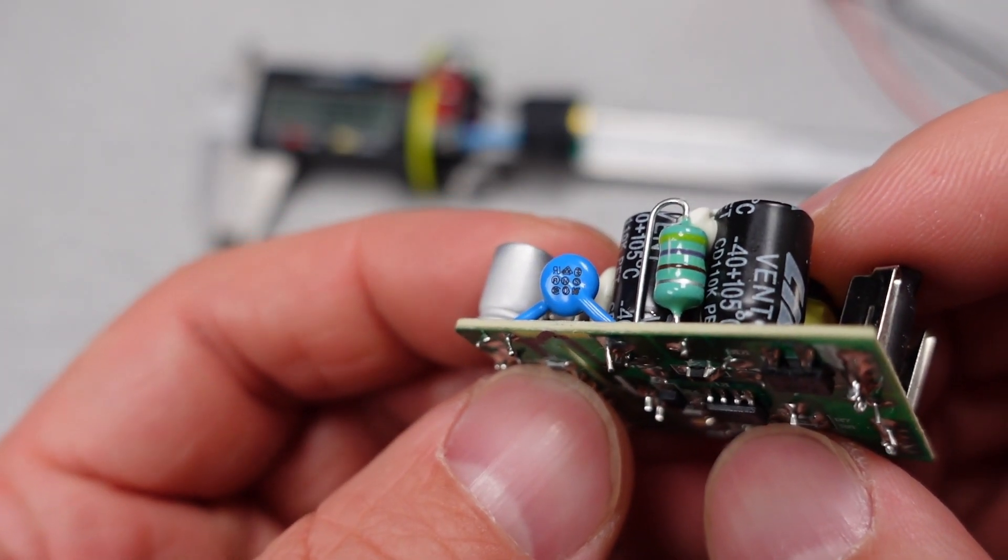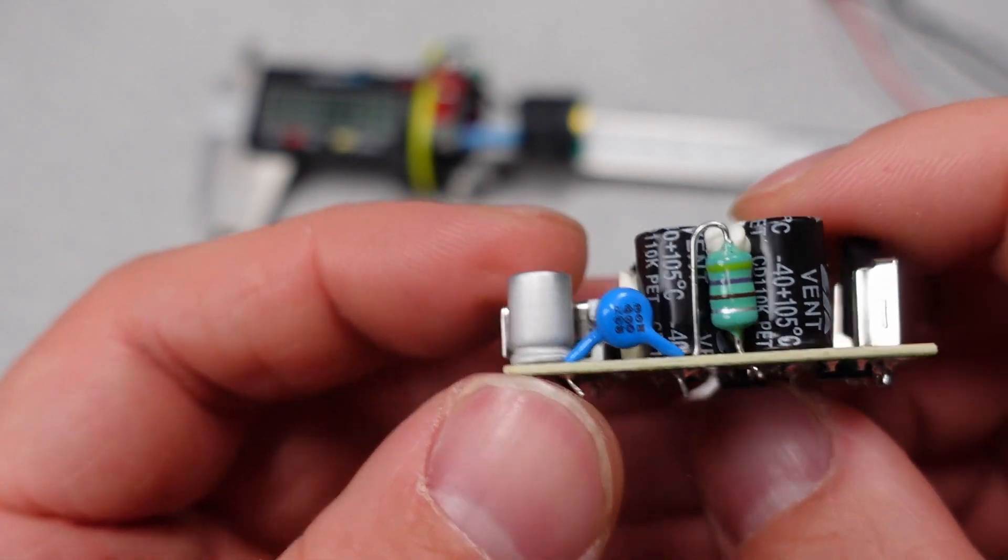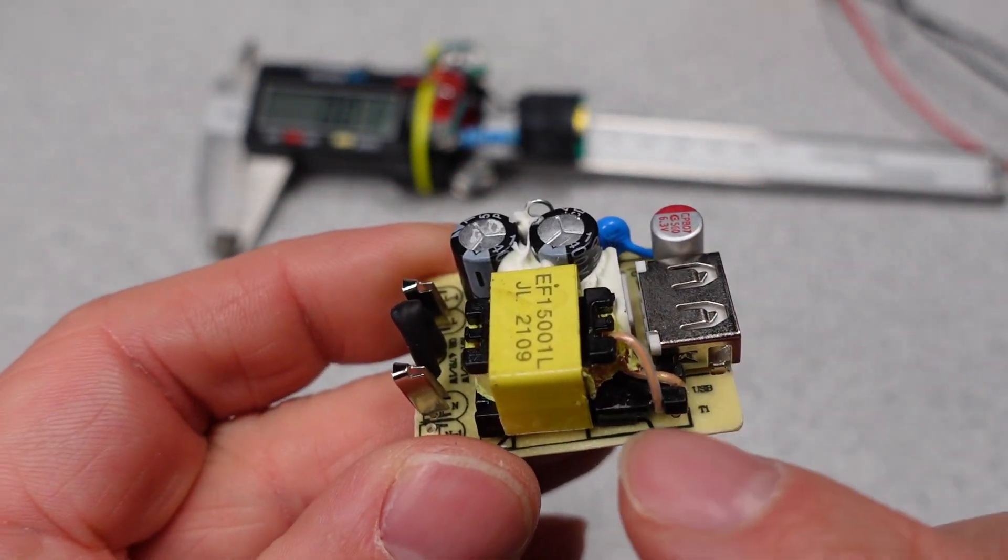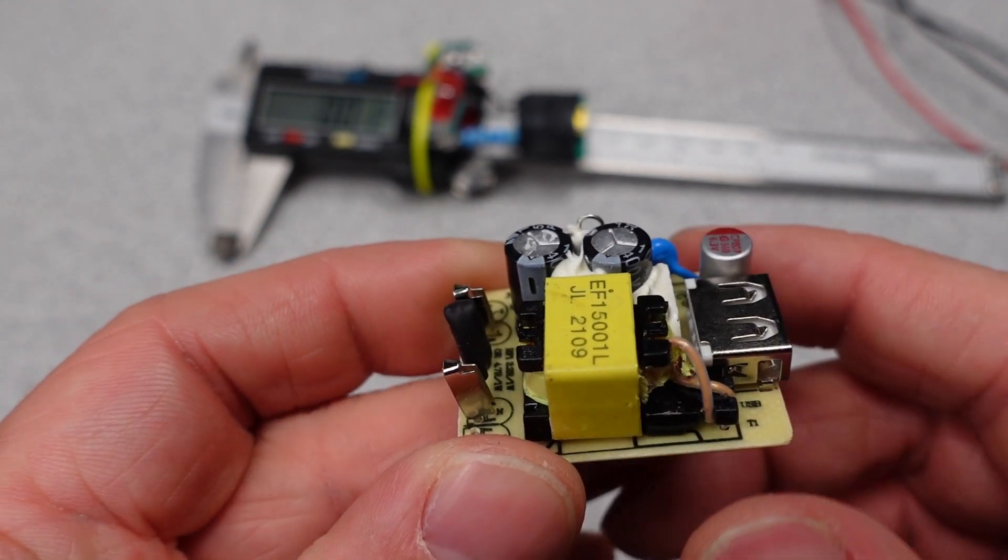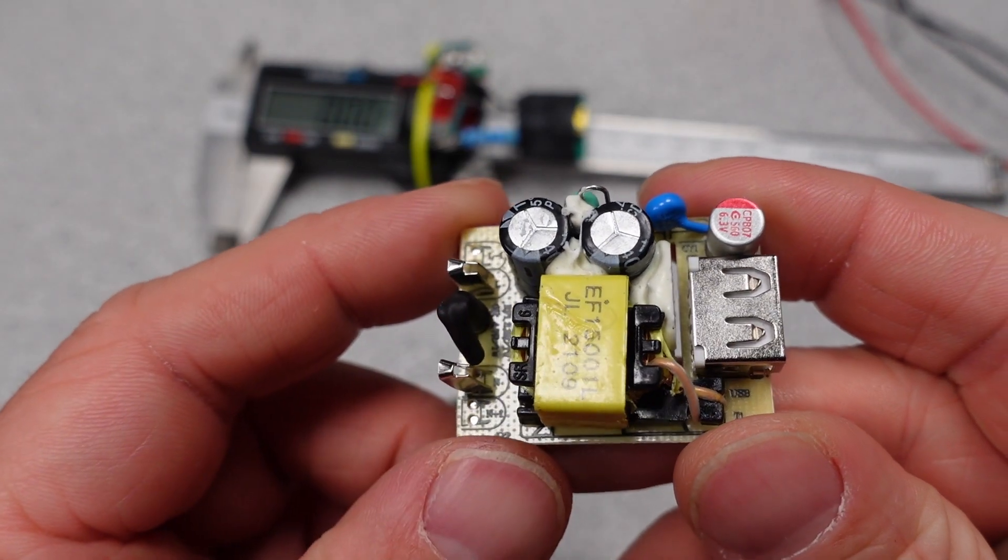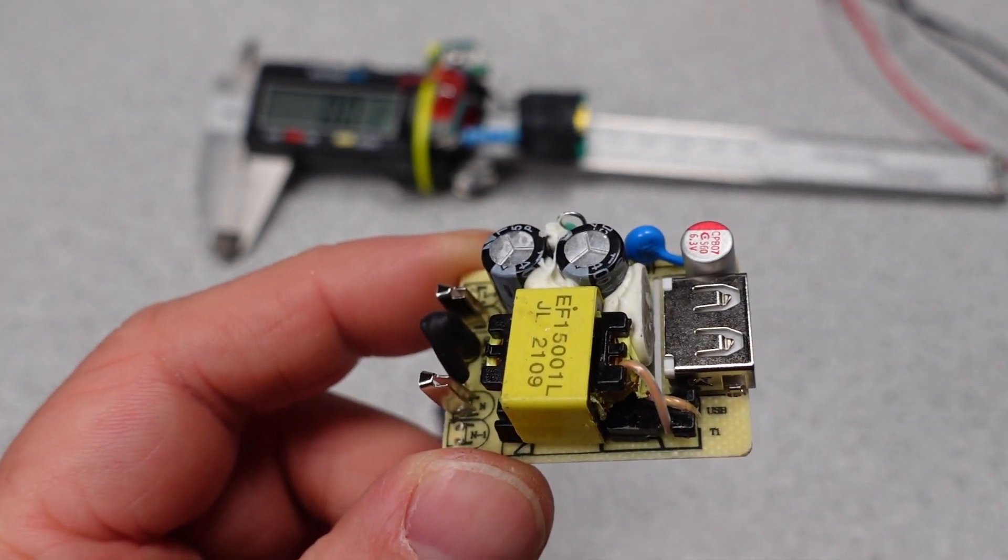There is also the matter of transformer isolation. All power adapters have transformers which convert voltage from a higher level to a lower level to charge devices. The isolation of the transformer needs to be sufficient to be greater than or equal to the creepage and clearance requirements inside the adapter.